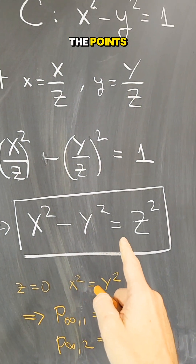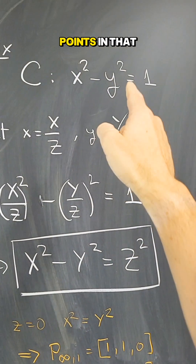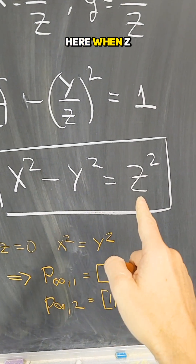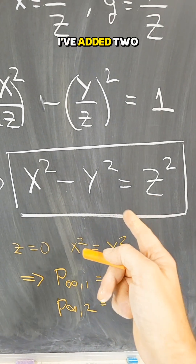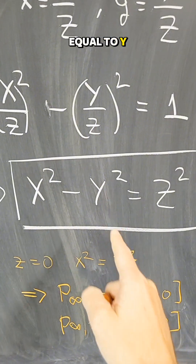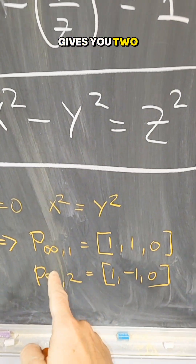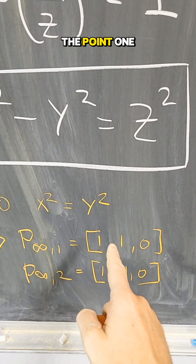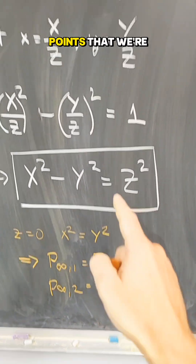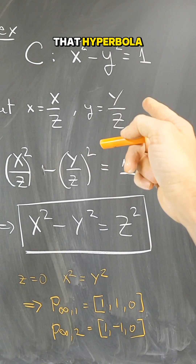The points when z is non-zero correspond to the points in that affine chart, but there are more points. When z is zero, I've added two more points: x² equals y², so x is plus or minus y, giving two points at infinity — the point (1, 1, 0) and the point (1, −1, 0). Those are new points not present in the affine chart, because they are at infinity in the graph of that hyperbola.